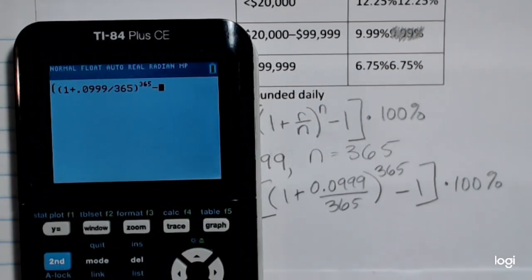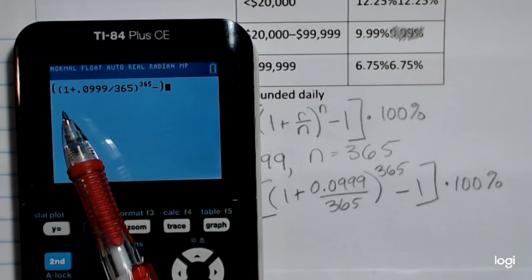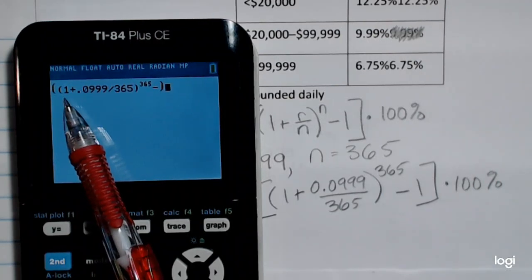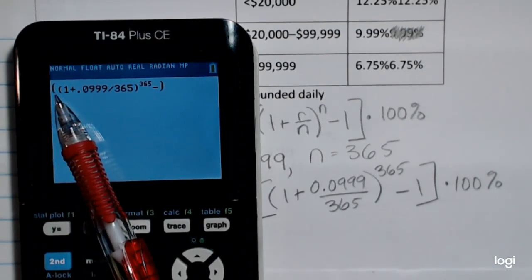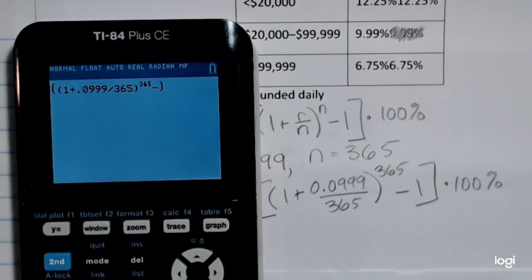And then I want to close my outer parentheses. One thing to keep in mind when you're working formulas with more than one set of parentheses: you need to make sure all of your parentheses are closed. I have two open here, so I need to make sure two are closed.